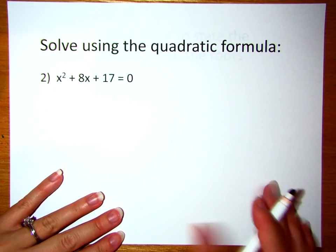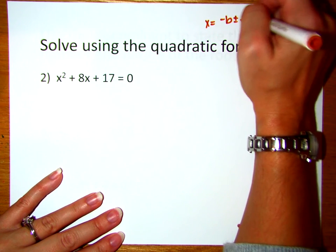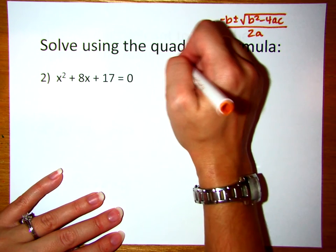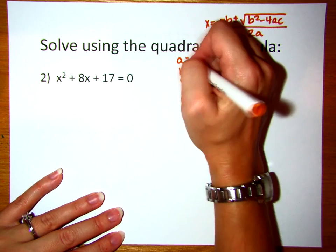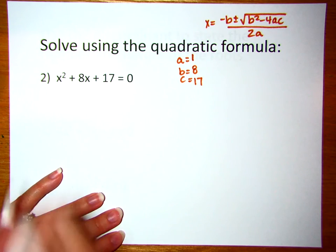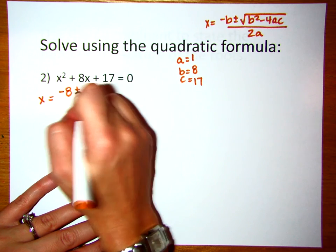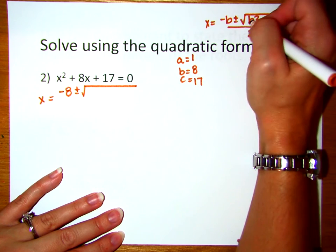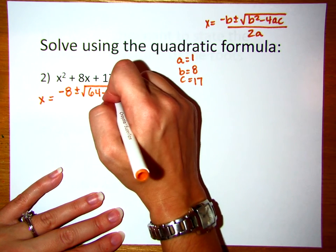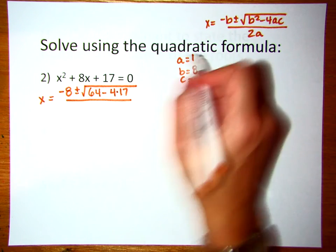We'll do another example with the quadratic formula. x equals negative b plus or minus the square root of b squared minus 4ac, all of that divided by 2 times a. We want to first find our a, b, and c. a is the number in front of x squared, which is 1. b is the number in front of x, which is 8. c is the constant, which is 17. So x equals negative 8 plus or minus the square root of 8 squared — that's 64 — minus 4 times 1 times 17, all over 2 times 1, which is 2.